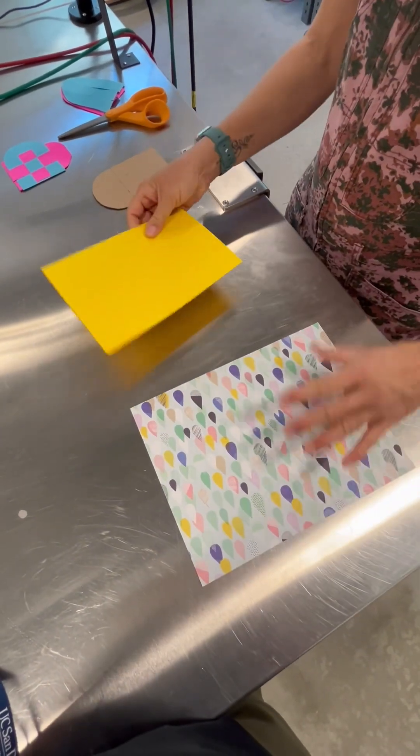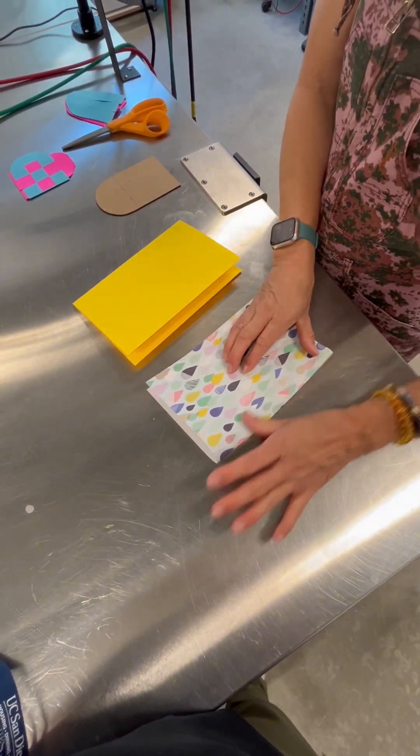You'll want to use two different types of paper or two different colors of paper, just so you can see the contrast in the basket.